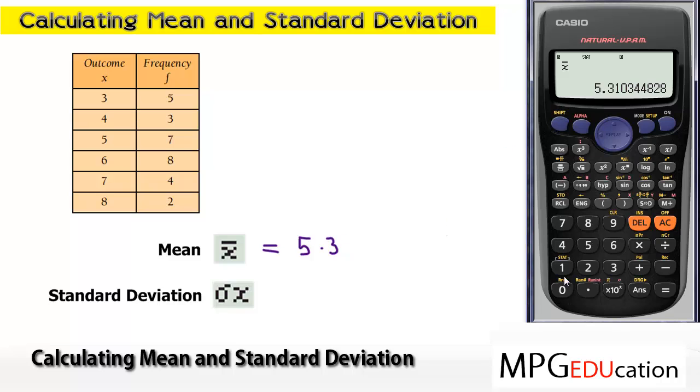And if I hit Shift, 1, 4, 3 for the standard deviation. Again, to one decimal place, we've got a standard deviation of 1.5.